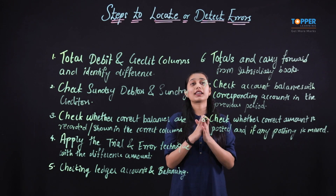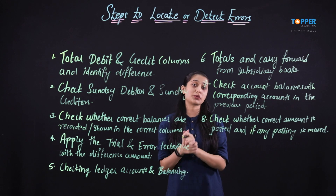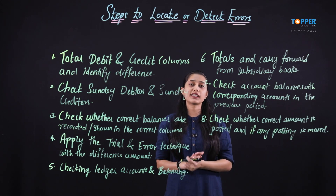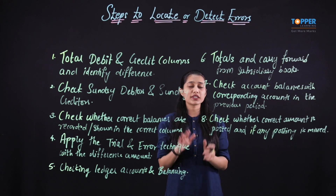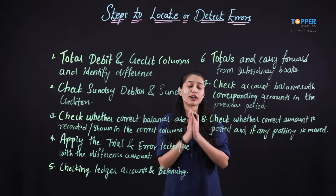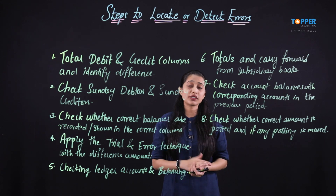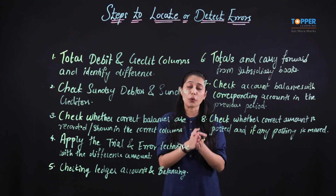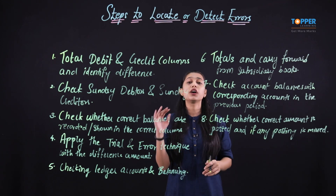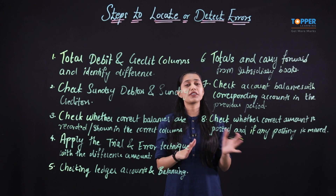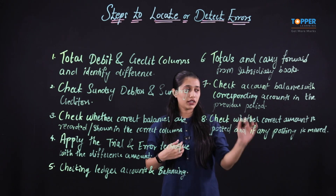Once this is done, and even after following all eight important steps if we are not able to identify the error, then there are just two options. Firstly, check the complete books of accounts — that is the original entry, the journal, the ledger, and also the opening entries. And then even if we are still not able to identify the error, go to the suspense account and transfer the difference to the suspense account.